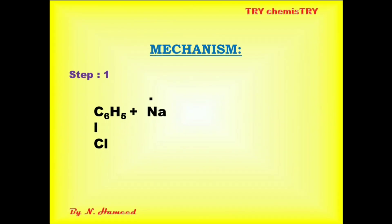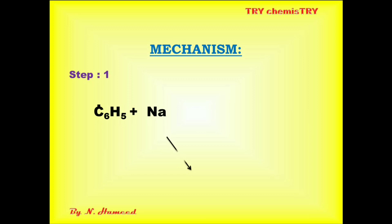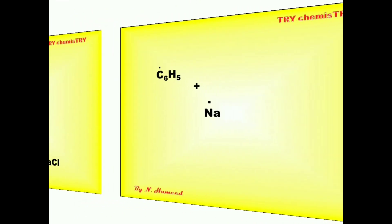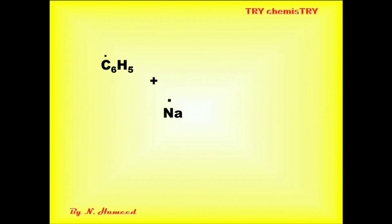Now we can see the mechanism of the reaction. It is similar to the Wurtz reaction. In step one, the sodium atom donates one electron to the phenyl group. The phenyl group cleaves the chlorine atom, which leaves as Cl minus. That Cl minus reacts with Na plus to give sodium chloride. Now the phenyl group is a free radical.